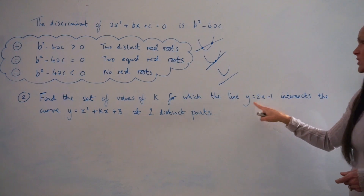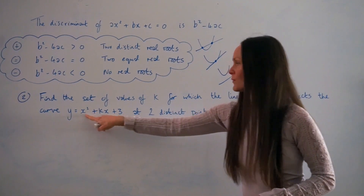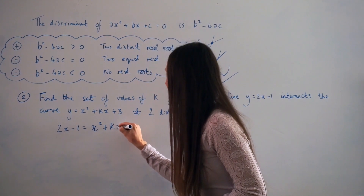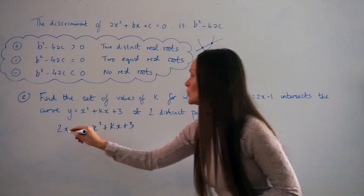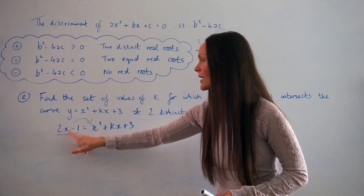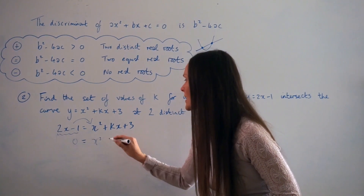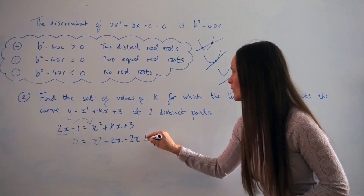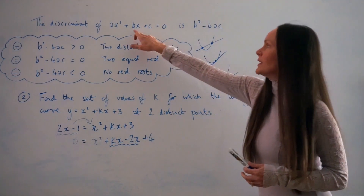Both equations are rearranged to make y the subject. Since y equals y, we know that 2x minus 1 equals x squared plus kx plus 3. The next step is to rearrange the equation so that it equals zero. Moving terms to the right-hand side — they change sign when they cross the equal sign — so negative 2x and positive 1. So 0 equals x squared plus kx minus 2x plus 4. Now I want to factorize this part to identify the value of b more easily, factoring out the x.